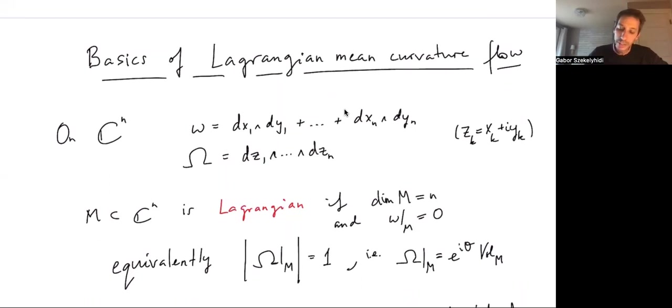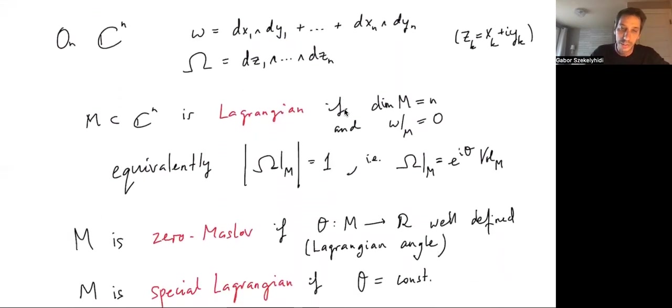Primarily I'd be working in C^n, but really the most interesting situation would be in a compact Calabi-Yau manifold. Also in most of these talks, most of the time will be in two dimensions. But for simplicity, let's just work in C^n. We have the standard symplectic form, little omega, and we have the standard holomorphic n-form, capital Omega. This is the basics of the Calabi-Yau structure on C^n.